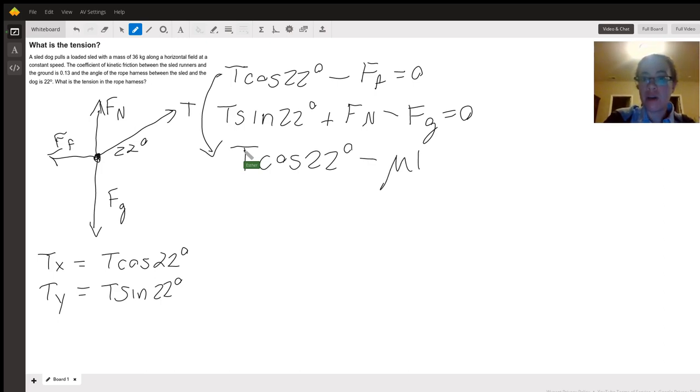Recall friction is just μ times the normal force. Now we can solve for F_N and plug that into our second equation. Let's label our equations for clarity. If we solve equation three for F_N, this gives us F_N equals T cosine 22° over 0.13, plugging in our value for μ.